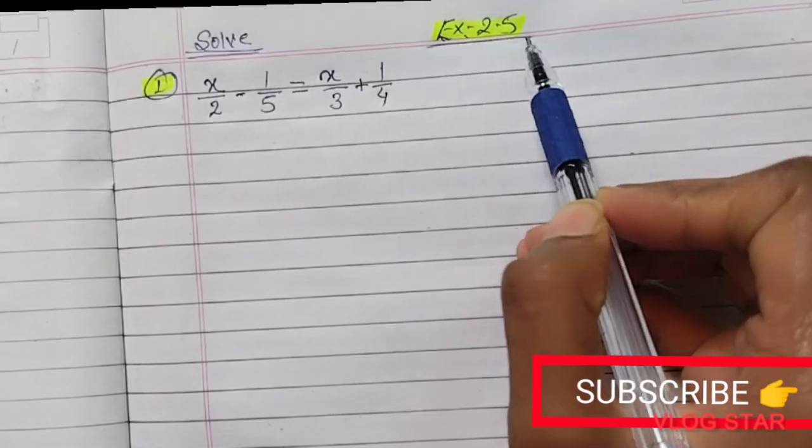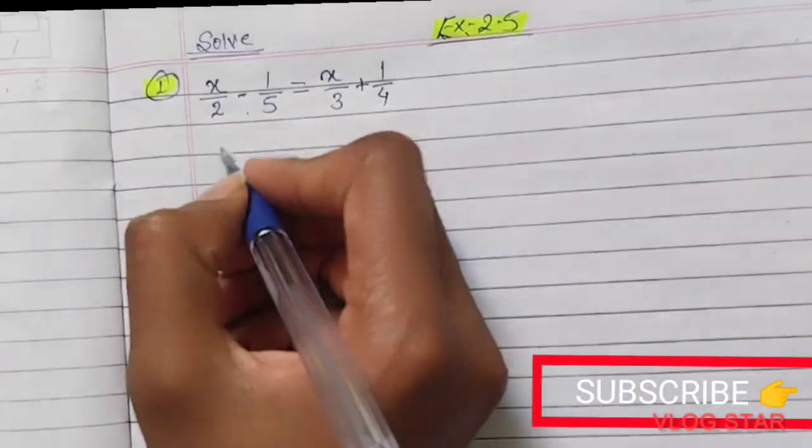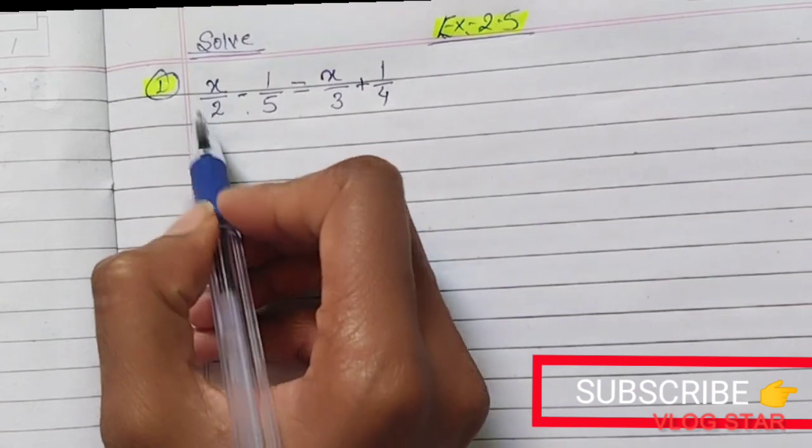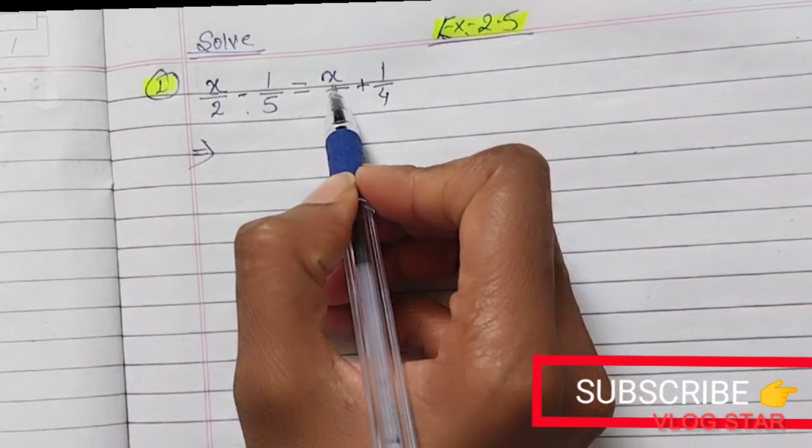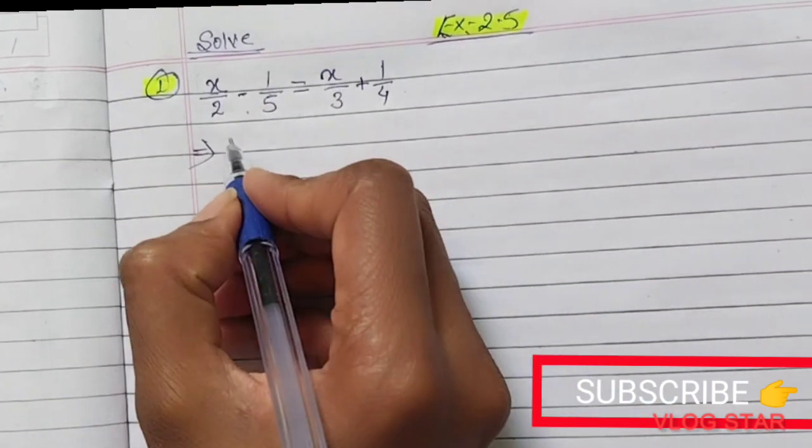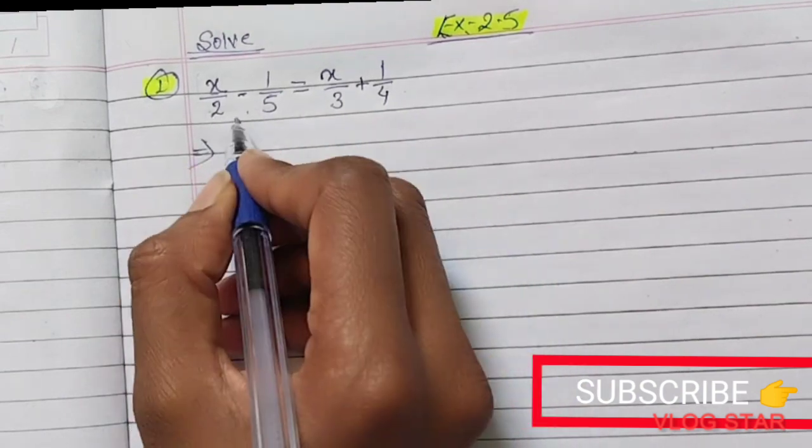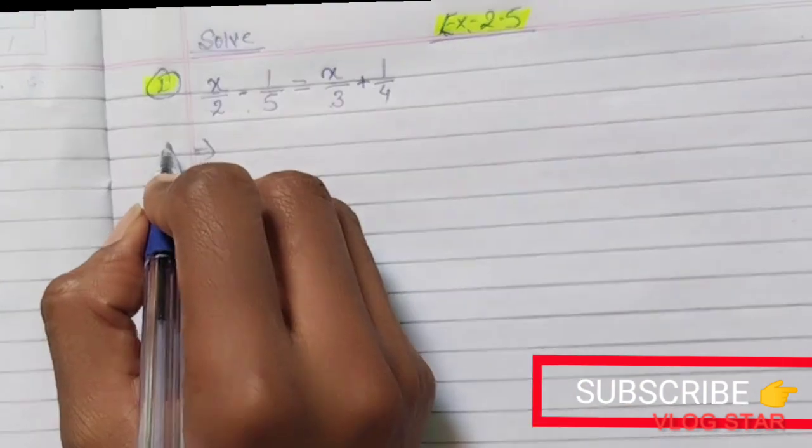Class 8, Exercise 2.5, Question Number 1. Here you can see there are two variables and two constants. I will take these two variables to one side and these two constants to the other side.